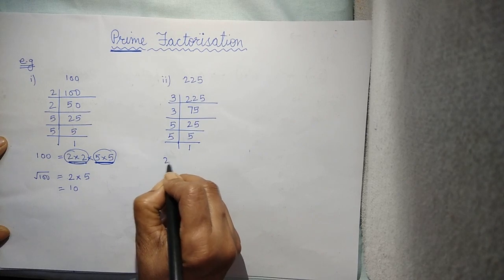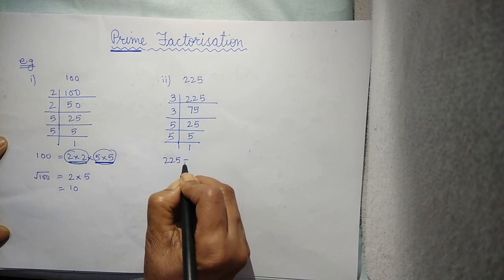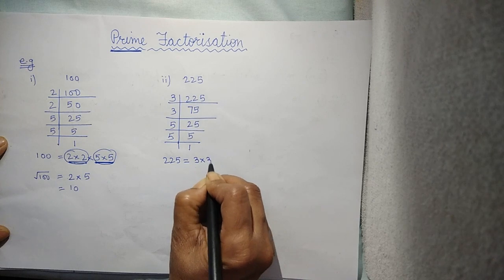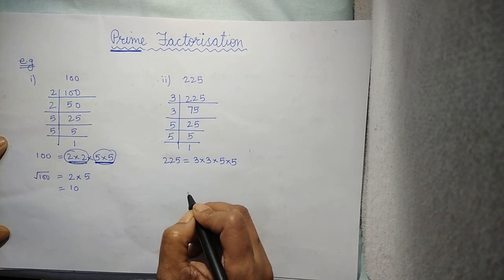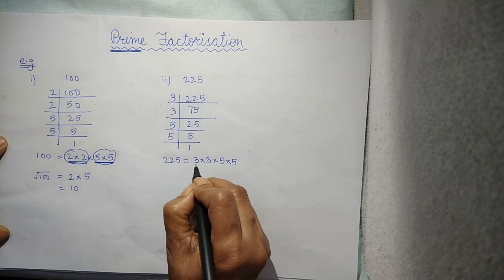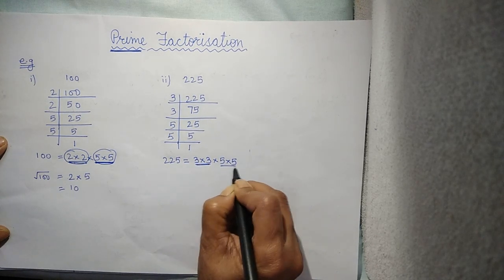Now, write it in the form of factors. 3 into 3 into 5 into 5. Again, I am saying it. Use only the prime numbers. Make the pairs together of the same number.